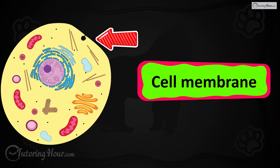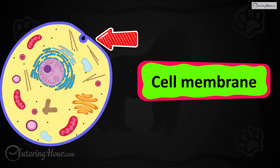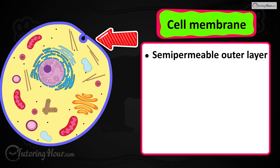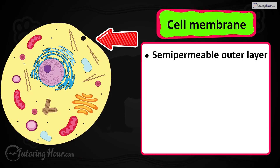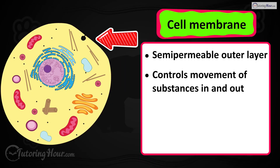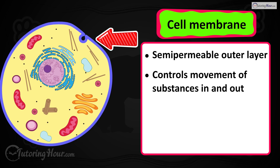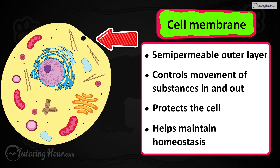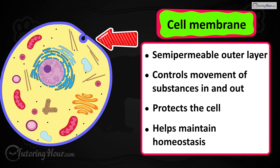The answer is the cell membrane. It acts as a semi-permeable outer layer that controls the movement of substances in and out of the cell. It helps protect the cell and maintains homeostasis.